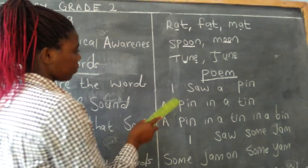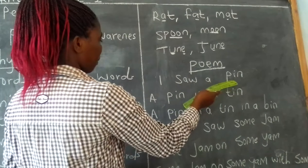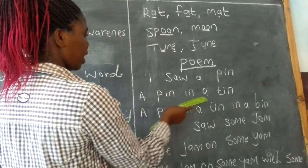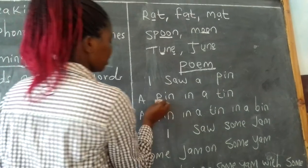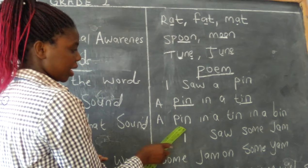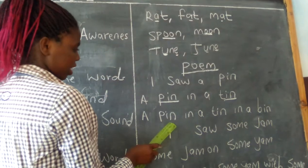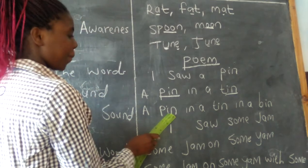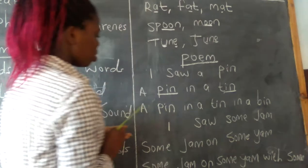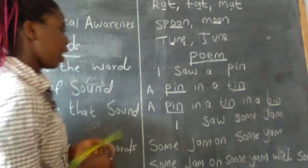Let me take you through the poem. 'I saw a pin. A pin in a tin. A pin in a tin in a bin.' So you can see we have 'pin', 'tin', and 'bin' — they are rhyming.